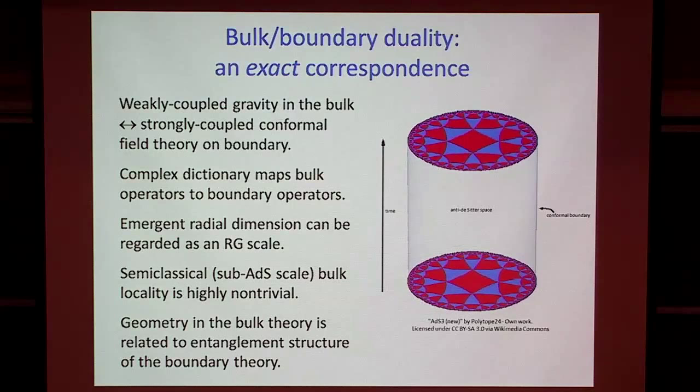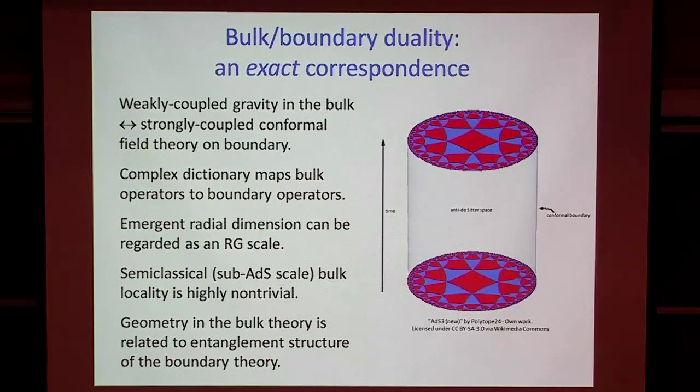Loosely speaking, we can interpret the extra emergent dimension of the bulk theory as a renormalization group scale of the boundary theory, but it's actually quite non-trivial that the bulk theory is local even on scales that are short compared to the ADS curvature scale. A recurring theme of the two programs running at the KITP this spring is that there is a relationship between the entanglement structure of the boundary theory and the geometry in the bulk theory.